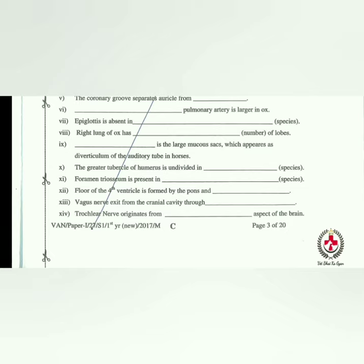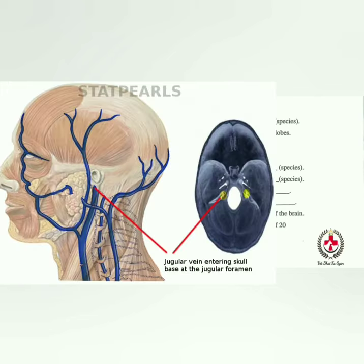The floor of the fourth ventricle is formed by the pons and medulla oblongata. The vagus nerve exits from the cranial cavity through the jugular foramen.